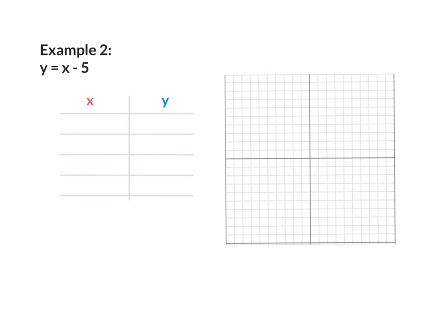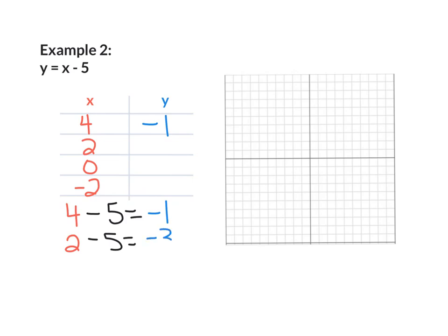Example number 2. The equation is y equals x minus 5. The function table doesn't have enough room to show work, so we'll show the work below. No inputs are given, so we're going to choose our own: 4, 2, 0, and negative 2. For x = 4: 4 minus 5 gives an output of negative 1. For x = 2: 2 minus 5 gives negative 3. For x = 0: 0 minus 5 gives negative 5. For x = negative 2: negative 2 minus 5 gives negative 7.